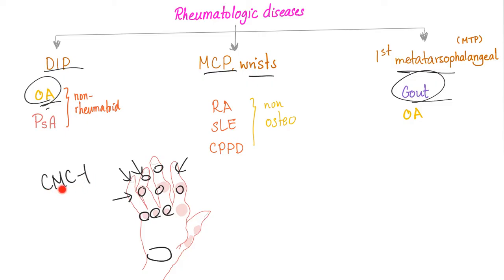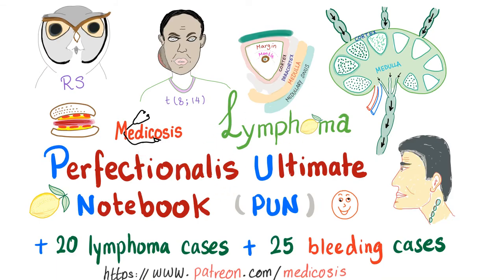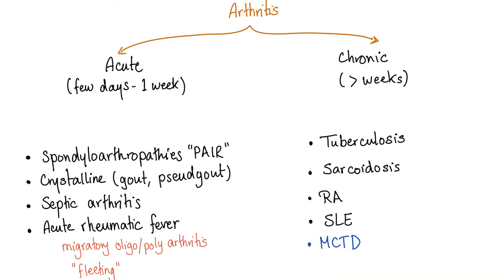First carpometacarpal — here are your carpal bones, and here is that first metacarpal. So the first carpometacarpal joint is this one. Arthritis can also be divided into acute and chronic. Where does osteo fit? Osteoarthritis is a chronic arthritis, and that's a big deal.